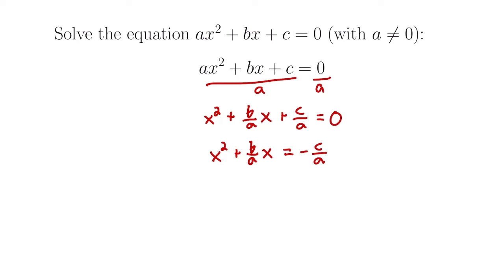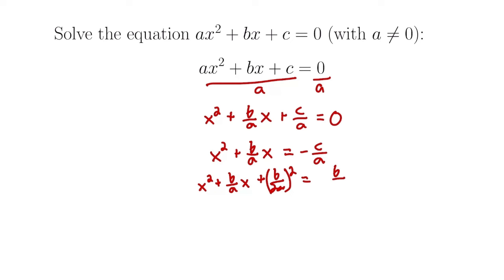Now we're going to use completing the square to get a perfect square trinomial on the left-hand side. We need to take half of b over a, which is b over 2a, and square it. We'll add b over 2a squared to both sides. On the right-hand side we write it as b over 2a squared minus c over a.